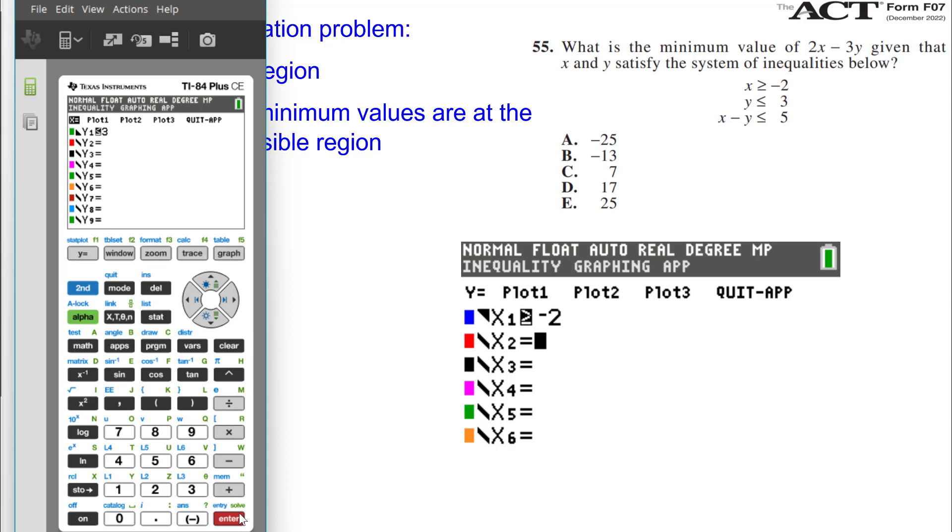And the third inequality, I do have to solve that for Y. So what I'll do is first subtract X from each side. And then I'm going to have to multiply each side by negative 1. Take the opposite of each term. So that will become Y, this will become positive X, and this will become a minus 5. But recall, when you multiply by a negative number, that flips the inequality sign. It's a key step there. Make sure you do that.